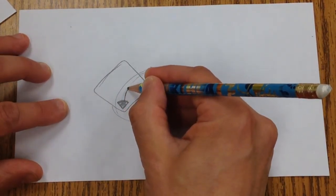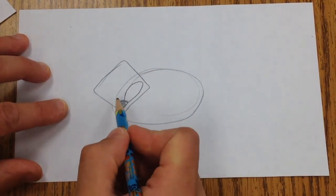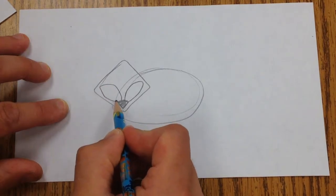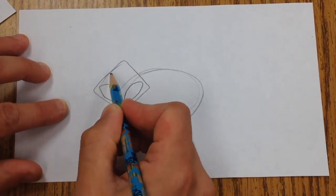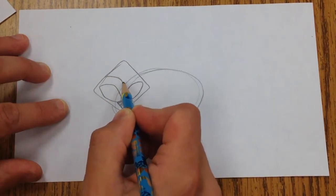I'm going to make this arch come up and around. I'll make this arch come up and around because some people say that raccoons have a little mask that they wear.